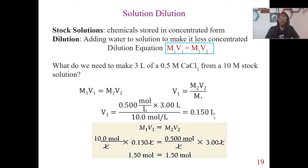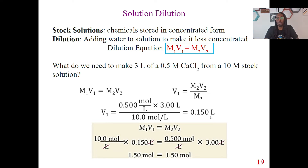Units are key here. Molarity is moles per liter, and we're working in liters. When we multiply, the liters cancel, and when we divide, the moles cancel, leaving us with just liters. Another hint is that we're solving for volume, so we should understand it has to be a volume unit — we're not going to be left with moles. So it has to be liters.